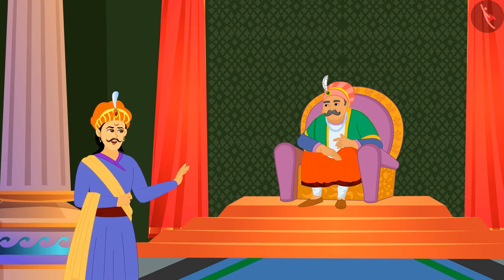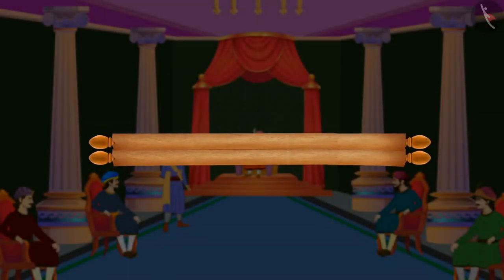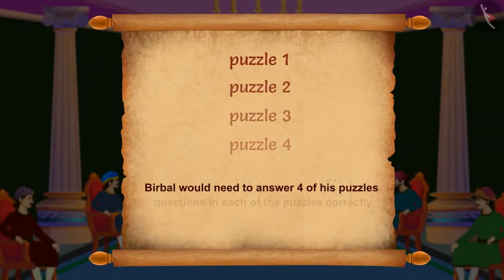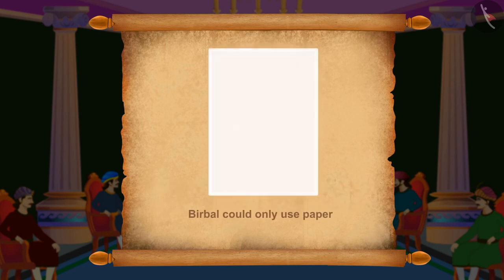Birbal said, I can solve any problem. Akbar did not believe him and said that Birbal would need to answer four of his puzzles correctly to make him believe. Additionally, Akbar put forth a condition that in order to answer these questions, Birbal could only use paper and no other objects.